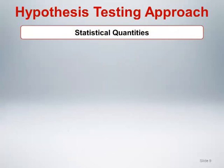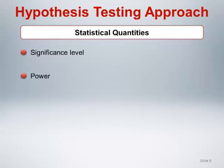Given a specific outcome and analytic method, calculation of needed sample size requires specification of several quantities: the significance level or alpha level of the primary hypothesis test, and the power or type 2 error rate of the primary hypothesis test.